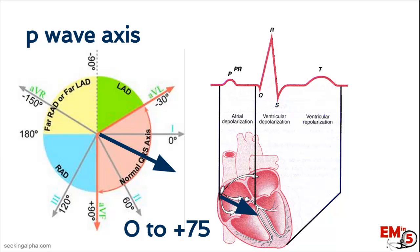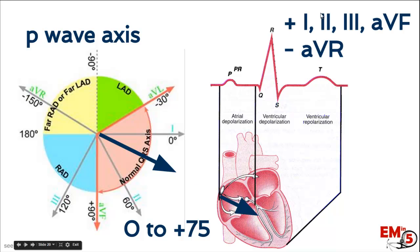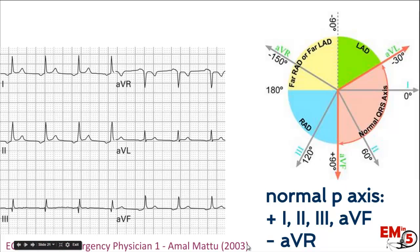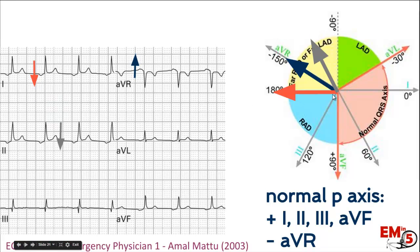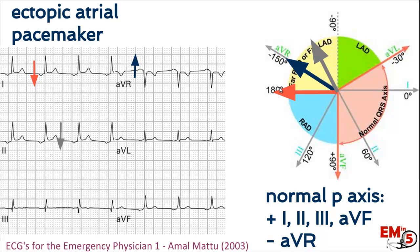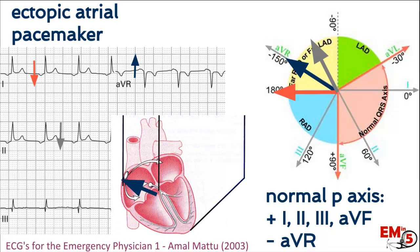Now let's talk about the P wave axis. The axis is very similar to the QRS, probably between 0 and 75 degrees, as it depolarizes from the SA node to the AV node. That means you should see positive waves in leads 1, 2, 3, and AVF, and always a negative wave in AVR. If you see a negative P wave in lead 1, negative in lead 2, and a positive wave in AVR, that's wrong — it means there's an ectopic atrial pacemaker somewhere directing the vector upwards and to the right.